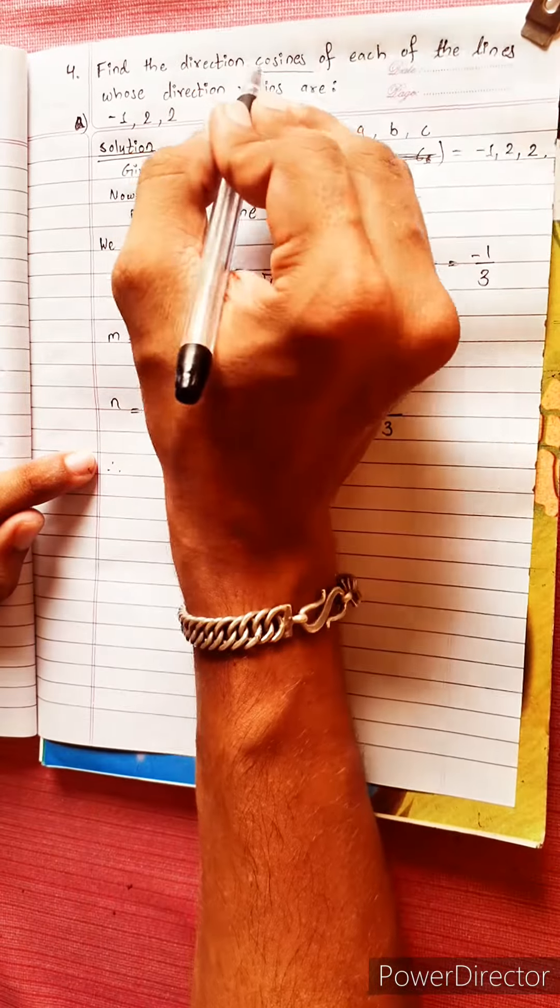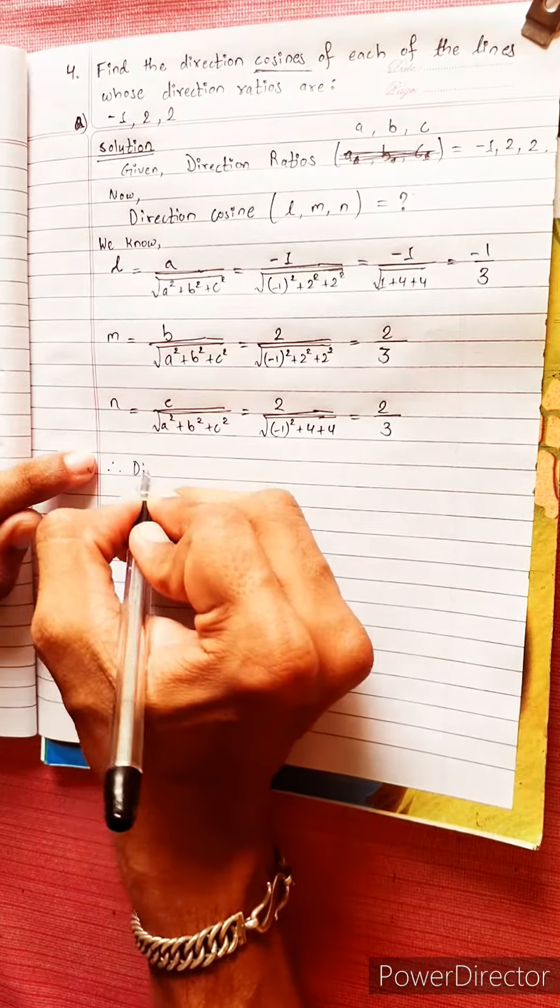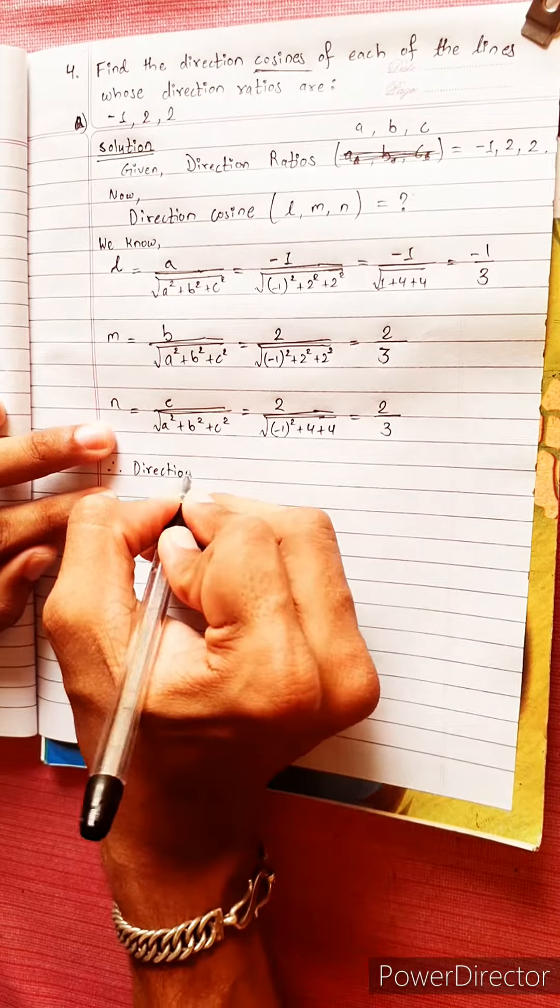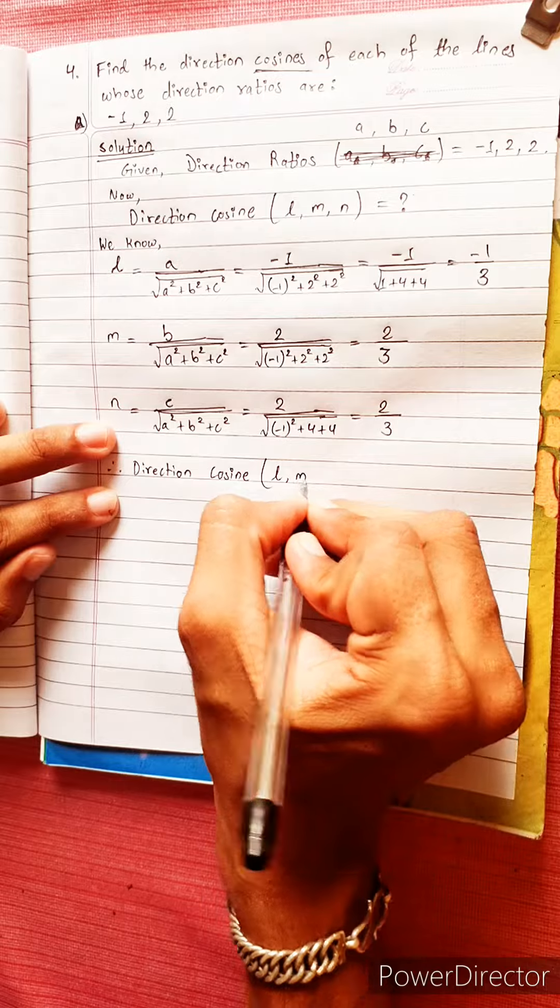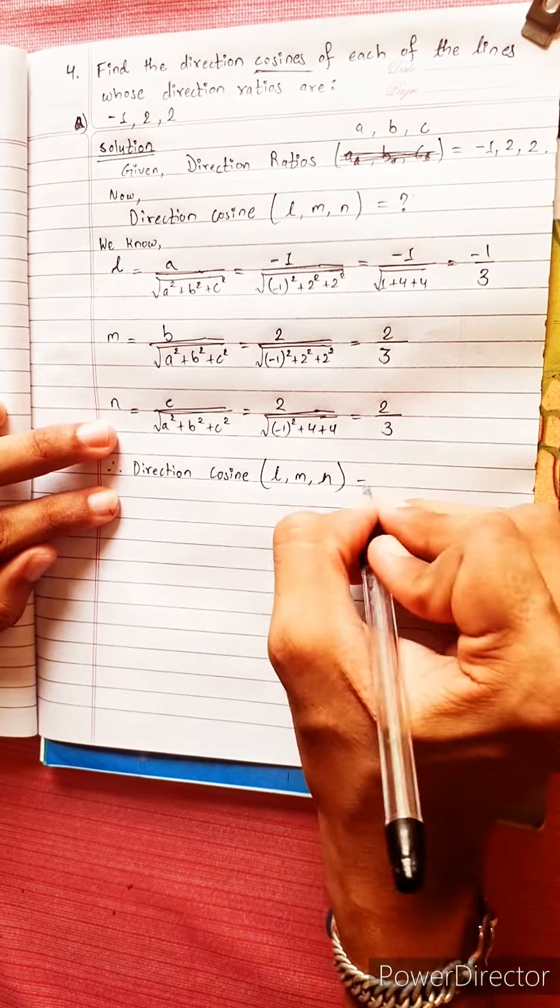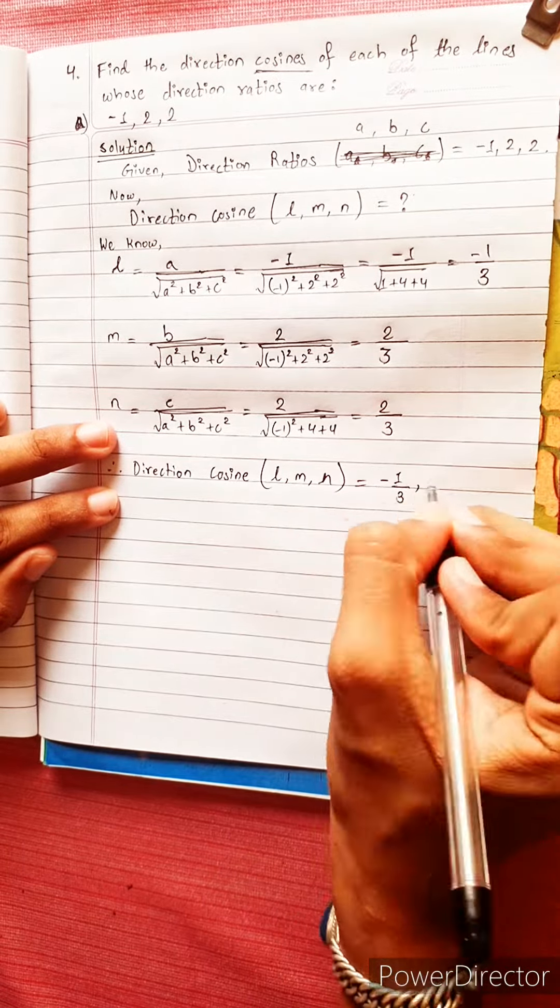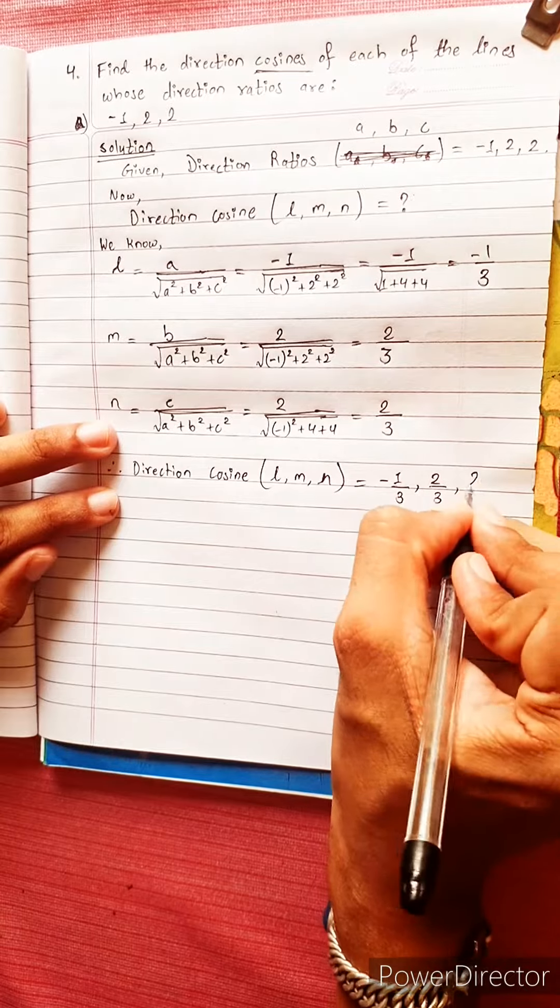Therefore, direction cosine L, M, and N equals to minus 1 by 3, comma 2 by 3, comma 2 by 3.